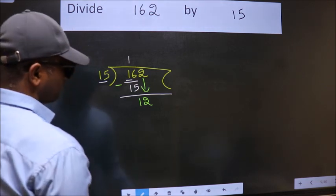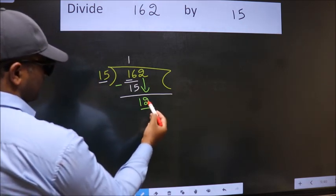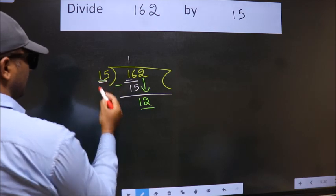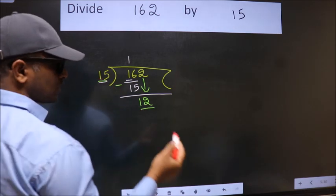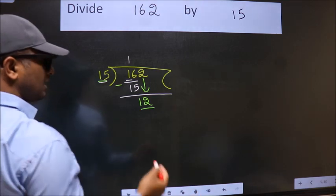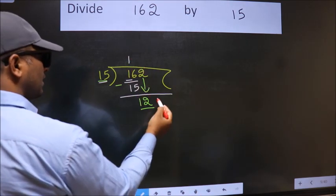And the mistake is this: here we have 12, here 15. 12 is smaller than 15, so what many do is they directly put dot, take zero.